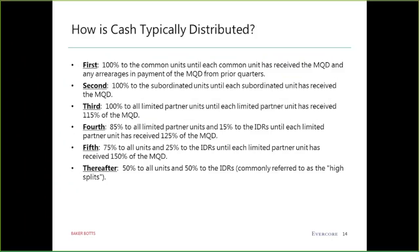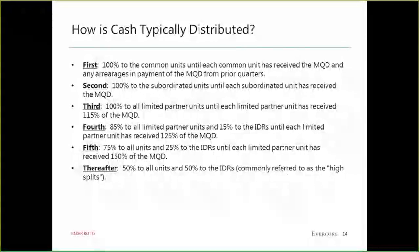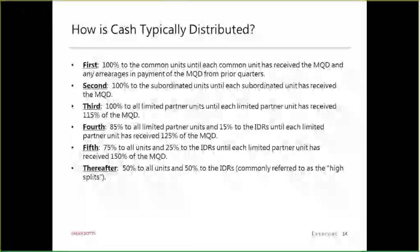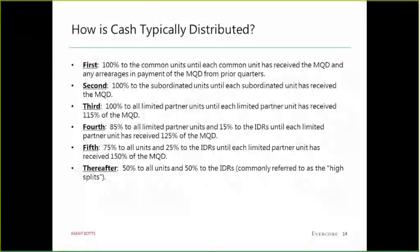How do IDRs work? A minimum quarterly distribution is set at the IPO based on the expected yield at pricing. If you expect a $20 IPO price and a 5% yield, that's $1 per year, or $0.25 per quarter — the minimum quarterly distribution. That doesn't mean the MLP is required to distribute that amount, but until common unit holders receive the $0.25, nobody else receives anything. The subordinated units get the next $0.25, and IDRs kick in above that in increasing sharing ratios of 15%, 25%, and 50% — though upstream MLPs typically cap at 25%.